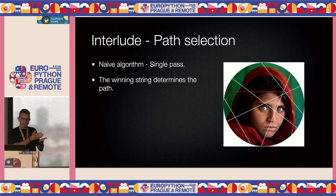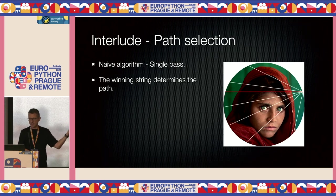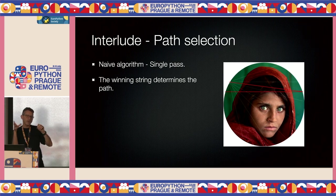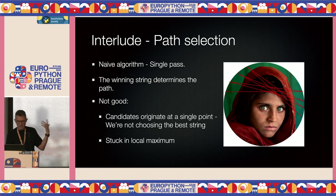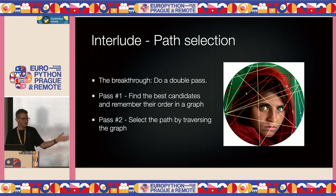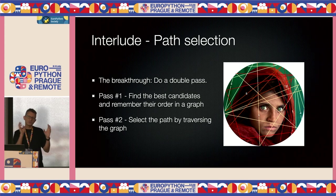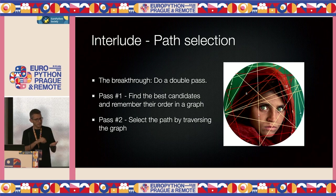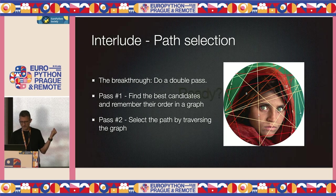The path algorithm was also a challenge. Originally the greedy algorithm was also determining the path — each time I chose a string, the next candidates would start from that string. This generated a local maximum where you could never skip to a more correct area. The breakthrough was doing it in two phases: first, just choose all the best strings; in the second phase, store them in a graph, then do a walk to select the path — but only after you've found the best strings.